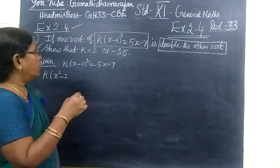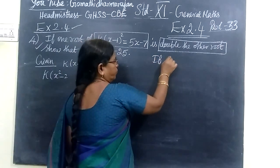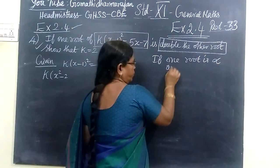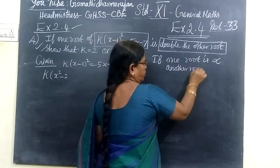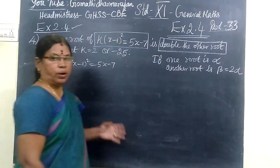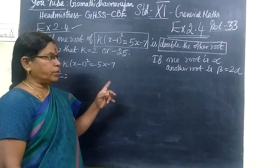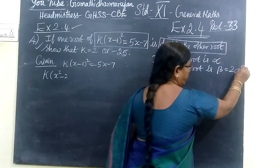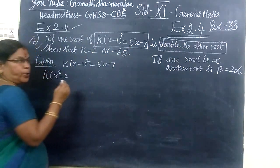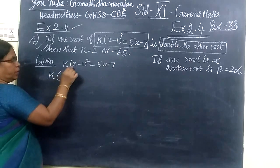One root is double the other root. If one root is alpha, then another root is — instead of beta, they are writing 2 alpha. We know alpha and beta are the roots of the quadratic equation. It is given one root is double the other root. So if one root is alpha, then another root is 2 alpha. So you will have to find the sum of the roots.